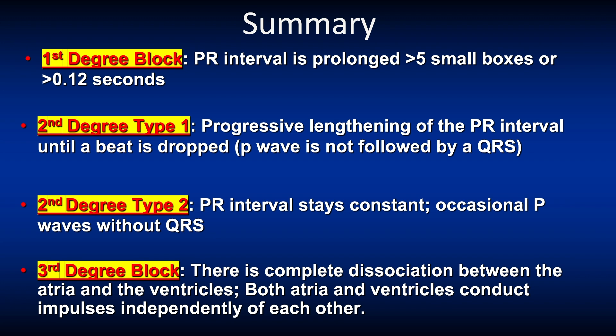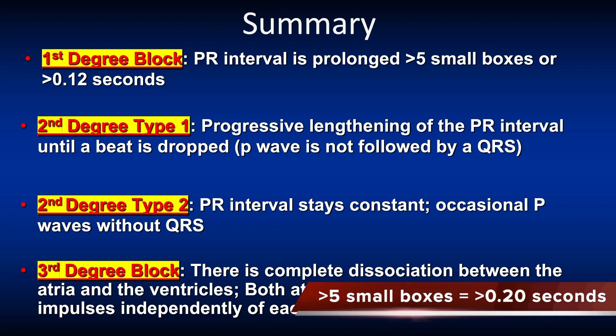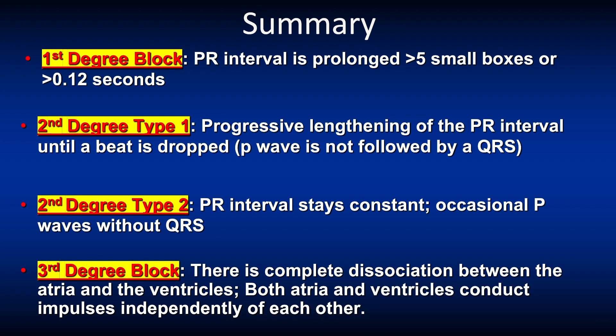In summary: First degree block — the PR interval is prolonged, more than five small boxes or more than 0.2 seconds, but remains constant. Second degree block type 1 — there is a progressive lengthening of the PR interval until a beat is dropped, meaning a P wave without a QRS complex. Second degree block type 2 — the PR interval stays constant until the occasional P wave without a QRS complex. Third degree block — there is a complete dissociation between the atria and the ventricles; the P waves and QRS complexes are not linked to each other.